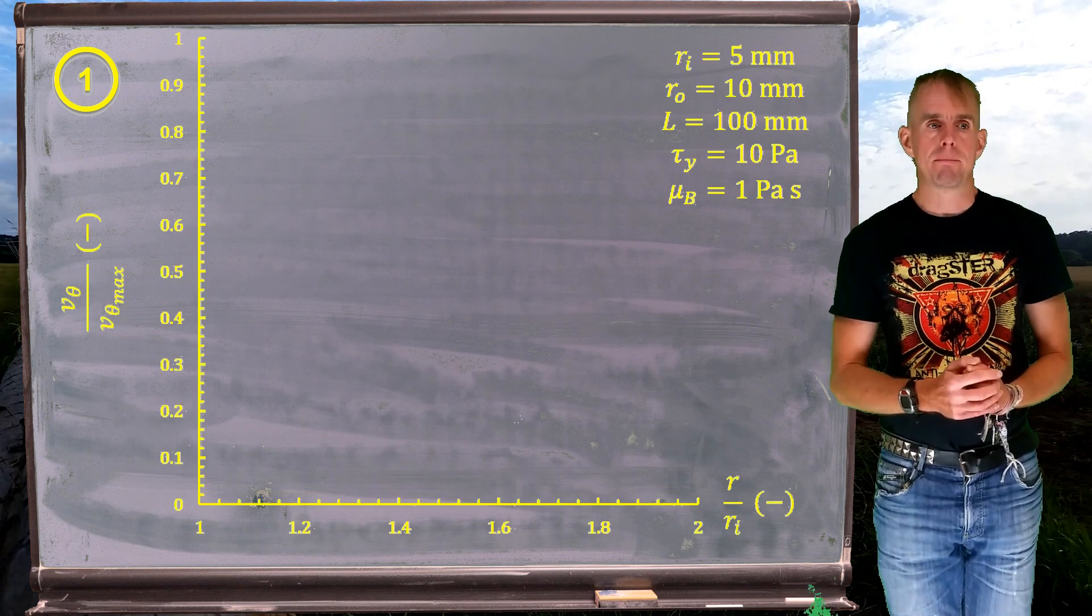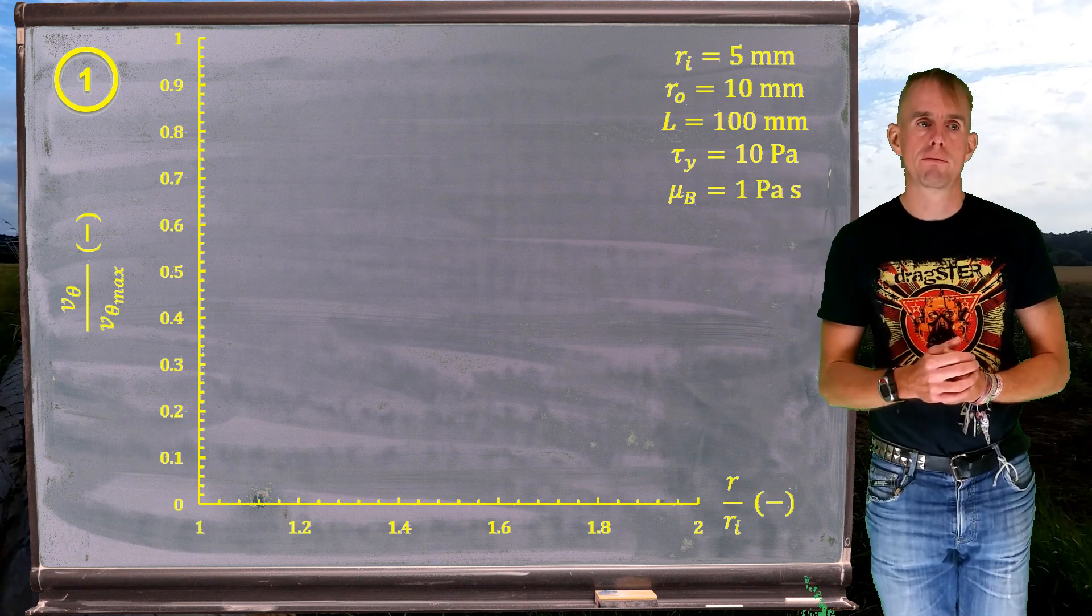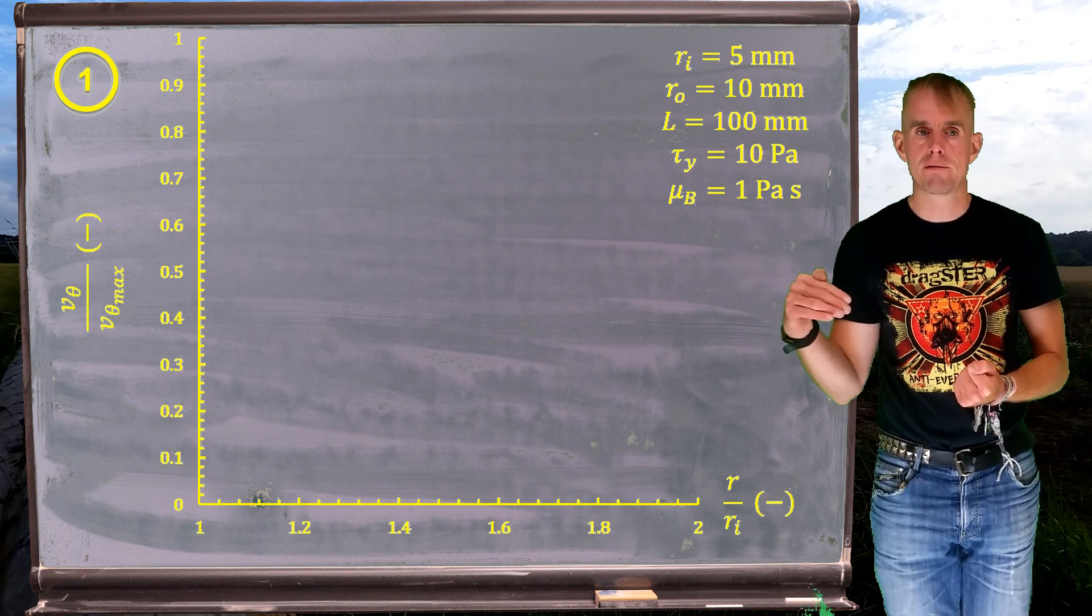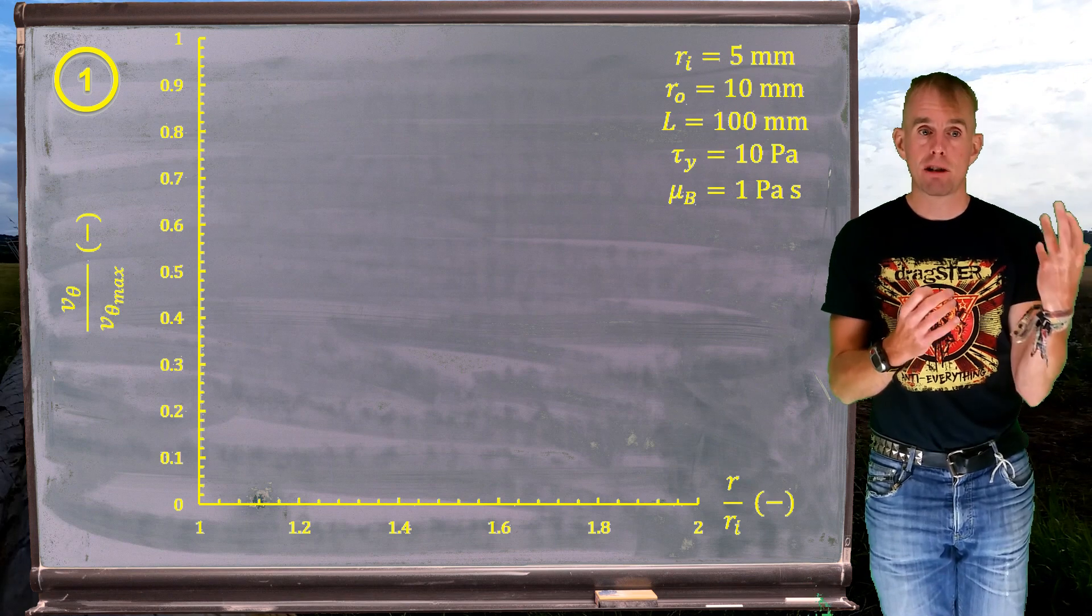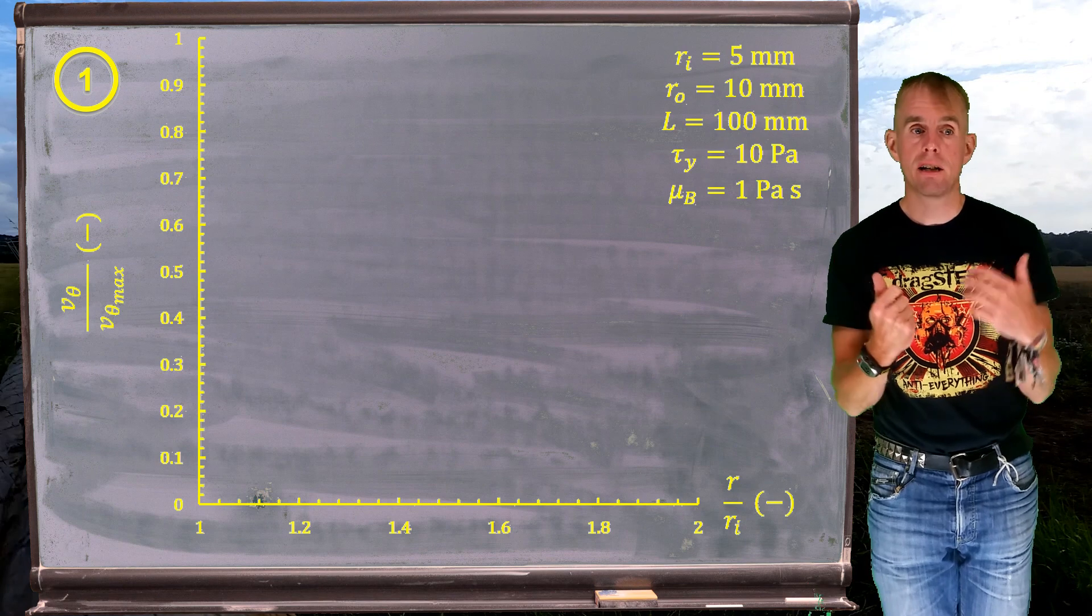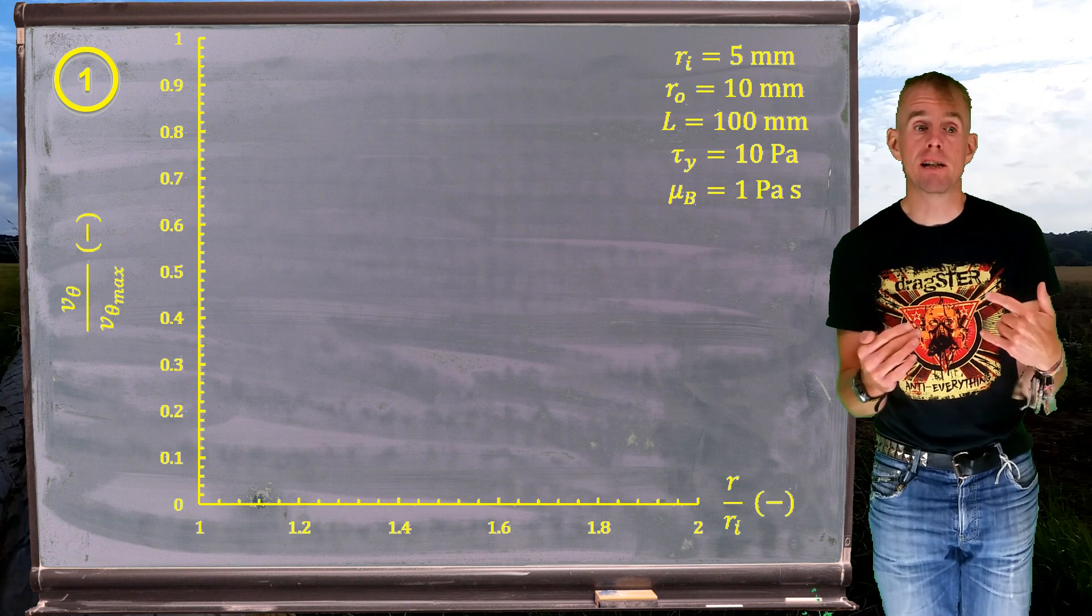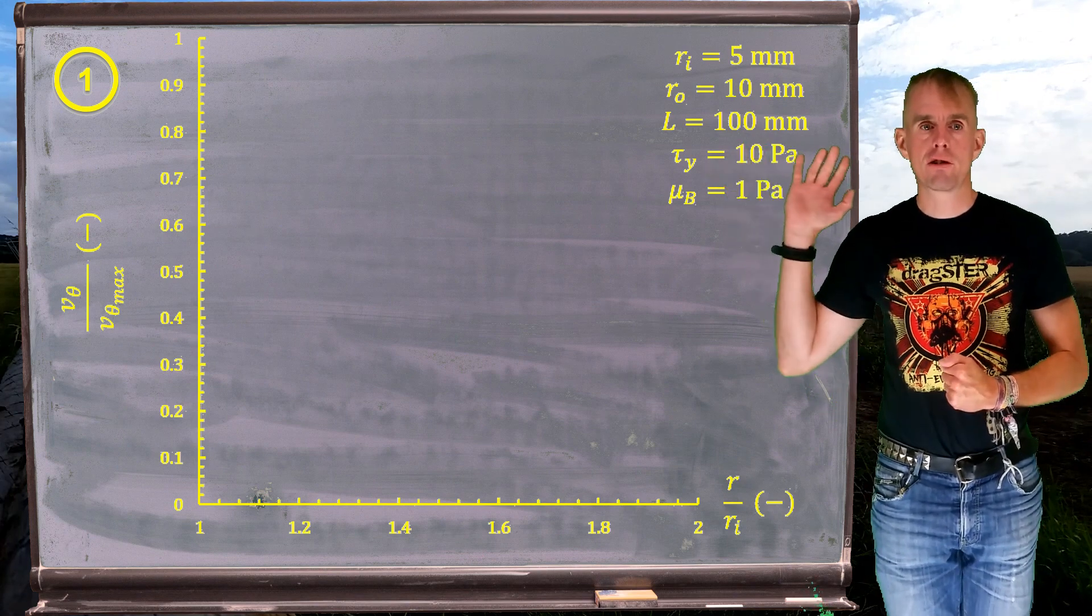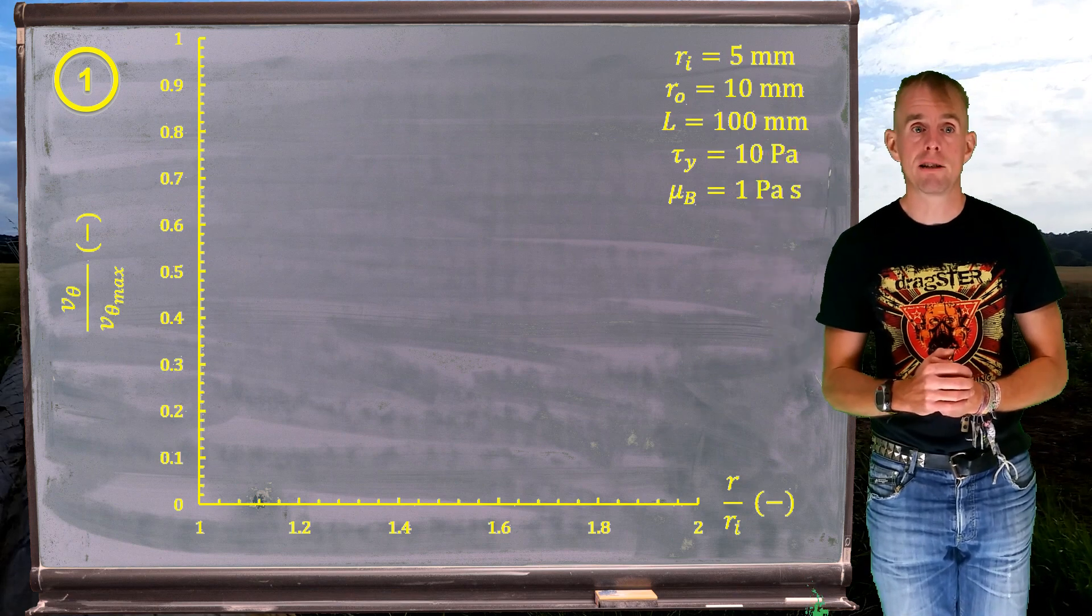So what does this mean? Let's plot non-dimensional rotational velocity, v theta over v theta max, as a function of r over ri. Remember, my inner radius is going to be smaller than my outer radius, hence r over ri goes from 1 upwards. And because my outer radius is double my inner radius, it simply goes from 1 to 2. I've put the dimensions and the material properties there on the board, just in case you want to recreate this graph.